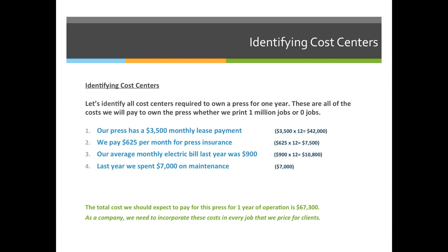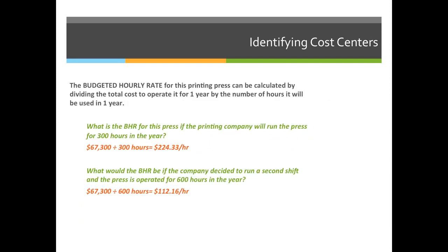As a company, we need to incorporate these costs into every job we price for clients. So even though the press only has a lease payment of $42,000 per year, we have to charge $67,300 to run the printing press. The budgeted hourly rate is calculated by dividing the total cost to operate it for one year by the total number of hours it will be in use for one year.